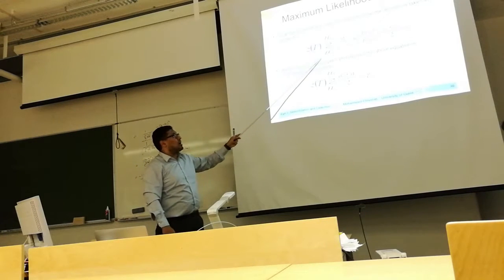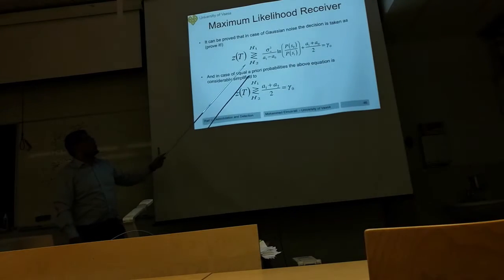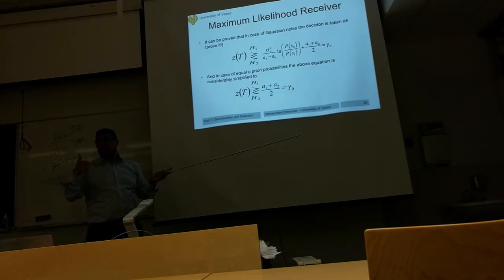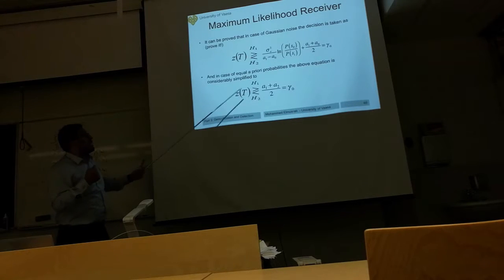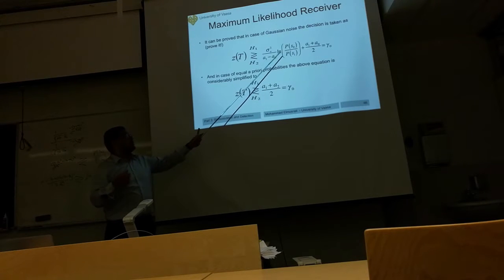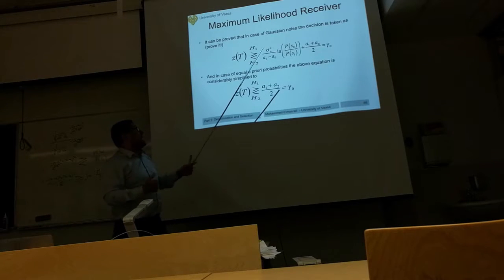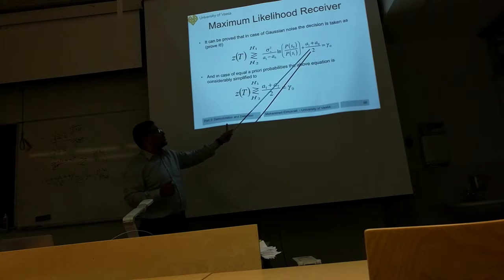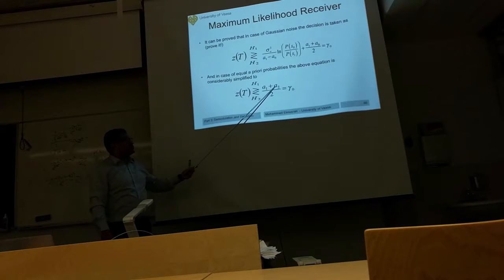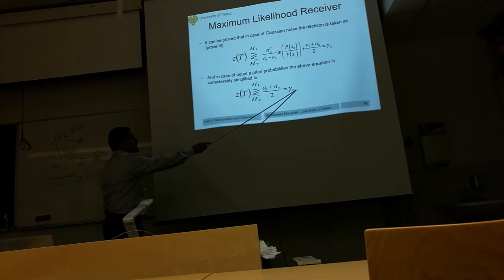After the derivation, the threshold α0 is obtained. If the received statistic Z is greater than α0, we take hypothesis 1 — the transmitted signal was S1. Otherwise, we take hypothesis 2 — S0. If the prior probabilities are equal, P(S0) = P(S1) = 0.5, then ln(P(S0)/P(S1)) = ln(1) = 0, and the threshold simplifies to α0 = (A1 + A0) / 2.